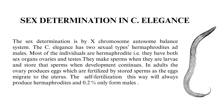C. elegans has two sexual types: hermaphrodites and males. Most individuals are hermaphrodites — that is, they have both sex organs, ovaries and testes. They make sperm when they are larvae and store that sperm as development continues. In adults, the ovary produces eggs which are fertilized by stored sperm as the eggs migrate to the uterus.